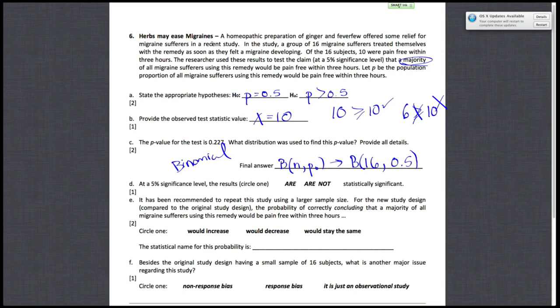All right, so given that your p-value is 0.227, at a 5% significance level, the results are not statistically significant because 0.227 is not less than 0.05.